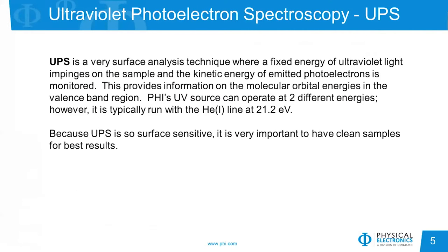The first technique is UPS. This is a very surface-sensitive technique where we use a fixed energy of ultraviolet light to bombard a sample in ultra-high vacuum, and we look at the photoelectrons that are emitted. It's essentially the same as XPS but with much lower energies. PHI's ultraviolet source can be operated at two different energies, but most of the time it's run with the lower energy helium-1 line at 21.2 eV.